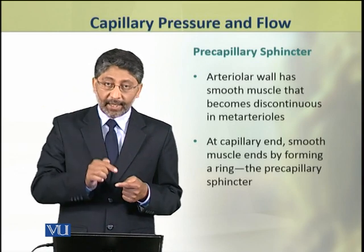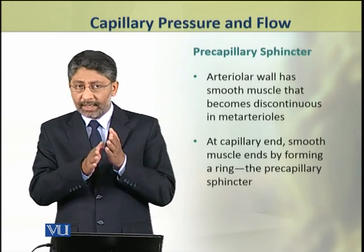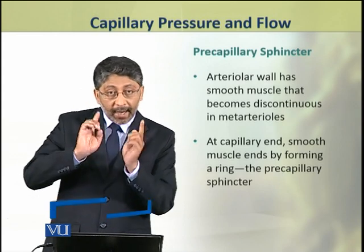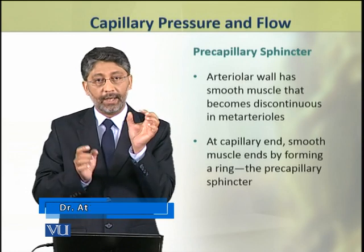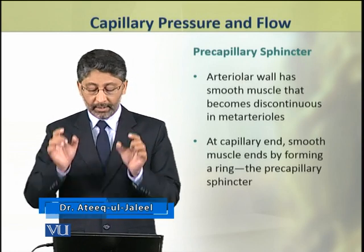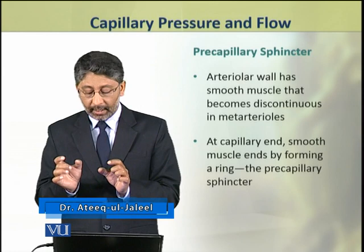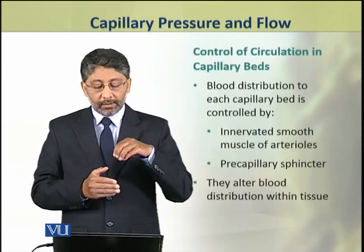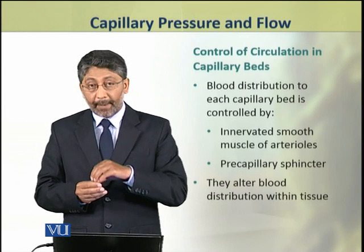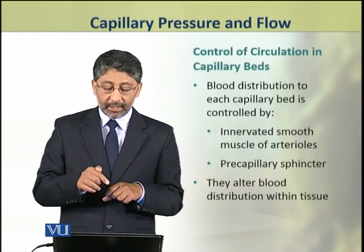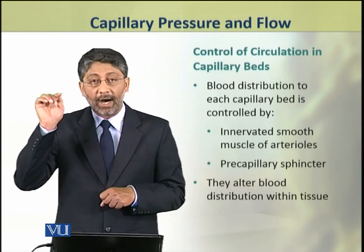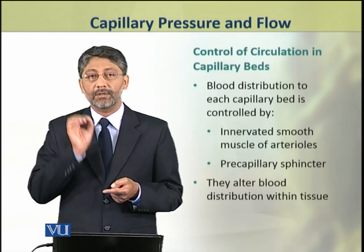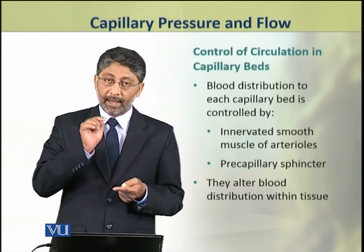When the capillary starts, smooth muscle ends, but before the end it forms a ring. This ring is called a pre-capillary sphincter. This pre-capillary sphincter, along with the innervated smooth muscles of the arterioles, plays an important role in the control of circulation in capillary beds.